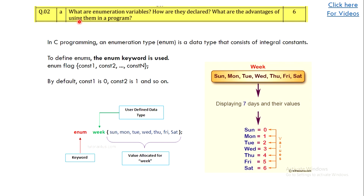The next question asks: what are enumeration variables, how are they declared, and what are their advantages? This question has three parts. Write a description of enumeration — which is nothing but enum — then explain how to declare or define them, and give a small code example. For example, an enum called 'week' contains items that are assigned numerical values starting from zero by default, though you can assign your own numbers. Briefly explain and give a small example to add weightage to your answer, then list the advantages.